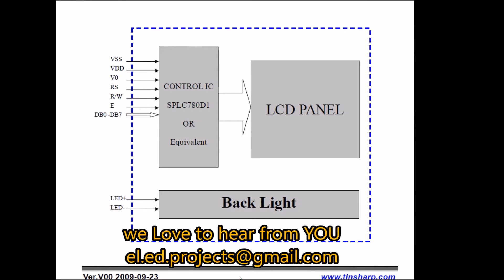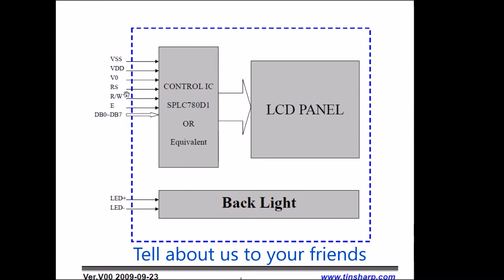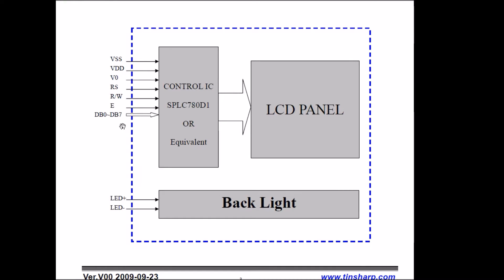Here you can see this is the ground and VCC power supply. This is for adjusting the display — we will come to it later. This is the register select. Register select is for the data register. This is read/write bar. This is for enabling, and these 8 pins are for bus input, DB0 to DB7. This is for the backlight: LED plus and LED minus.